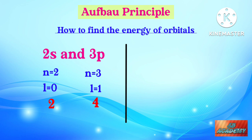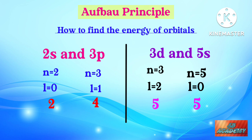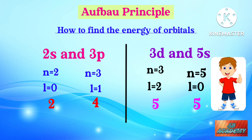There is a special case to know. For 3d and 5s: in the case of 3d, n equals 3 and l equals 2, so n plus l equals 5. In the case of 5s, n equals 5 and l equals 0, so n plus l also equals 5. When two orbitals have the same n plus l value, we decide based on the principal quantum number. Since 3d has n equals 3 and 5s has n equals 5, the orbital with the lower principal quantum number has lower energy. Hence, 3d has smaller energy and 5s has more energy.